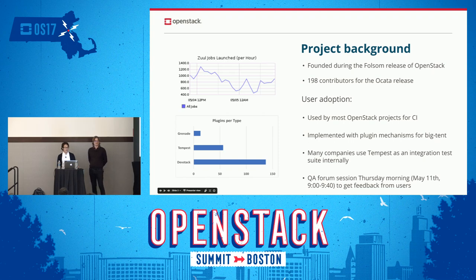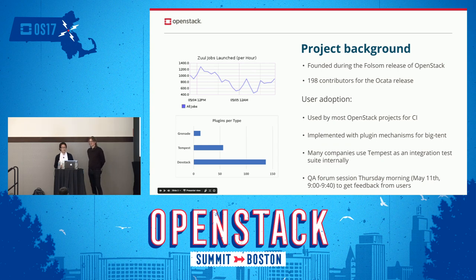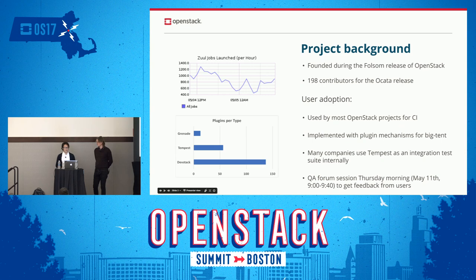Here is the project background. The QA project was founded during the early days of OpenStack. The first IRC meeting was August 2012, almost five years ago. At the early stage, we had very few contributors, but now we have almost 200 contributors for the previous August release. QA components are used on most OpenStack projects for CI, which means gating tests.